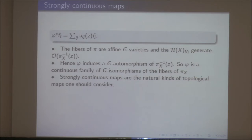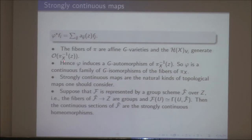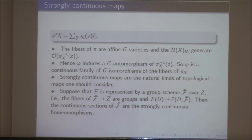Strongly continuous maps are the natural topological maps to consider. If the sheaf of groups F is represented by a group scheme F-tilde — a complex analytic space over Z whose fibers are groups — then the continuous sections of F-tilde are exactly the strongly continuous homeomorphisms. So these are the natural thing to look at.